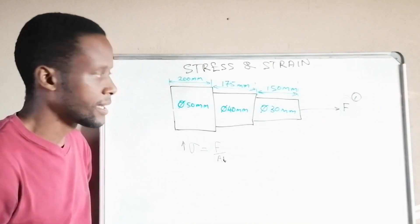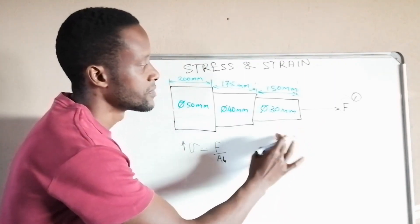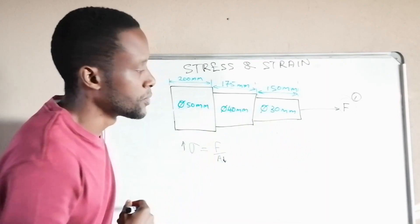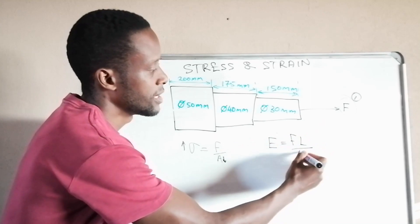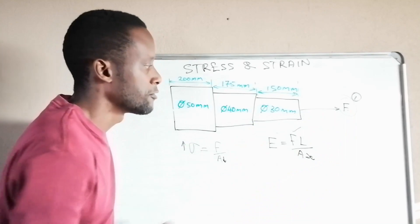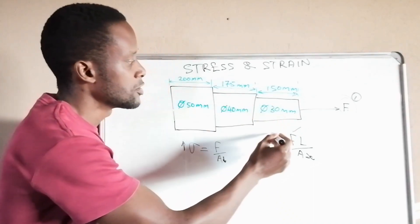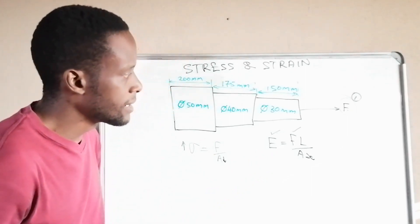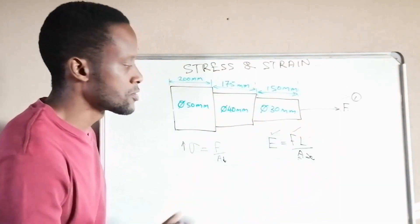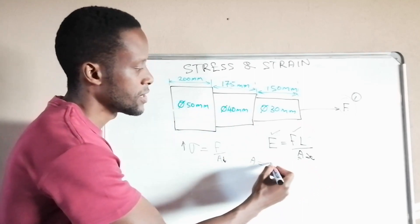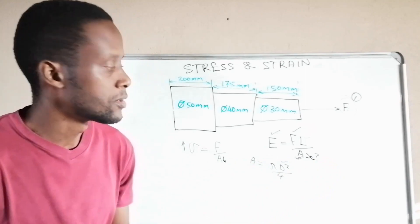The force is the same throughout. We'll use the formula for change in length: δx = F·L / (E·A). The modulus of elasticity is 200 gigapascal and is the same throughout since the bar is made of the same material. The lengths for each part are given, and since all cross-sections are circular, area = π·d² / 4. The only thing we need to find first is the force.